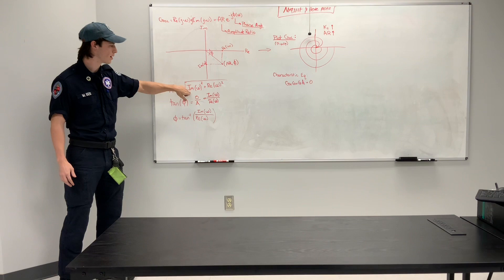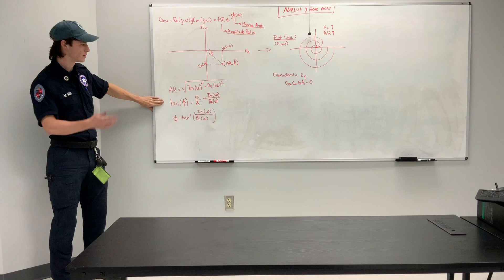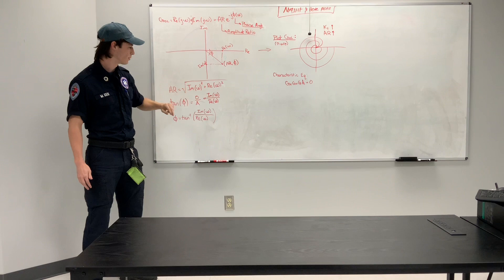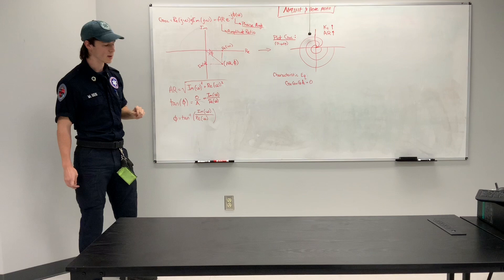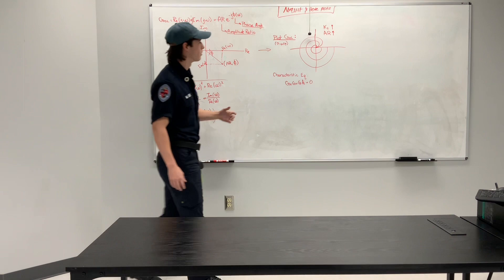You take the square of the imaginary portion plus the square of the real portion, plotted here and there, to get the magnitude in the middle. And just to remind you, tangent of any angle equals the opposite over the adjacent. So in this instance, the opposite is going to be the imaginary portion of omega and the adjacent section is going to be the real portion of omega. So to solve for the phase angle, you simply take tangent of negative 1, or the arc tan of the imaginary portion over the real portion.